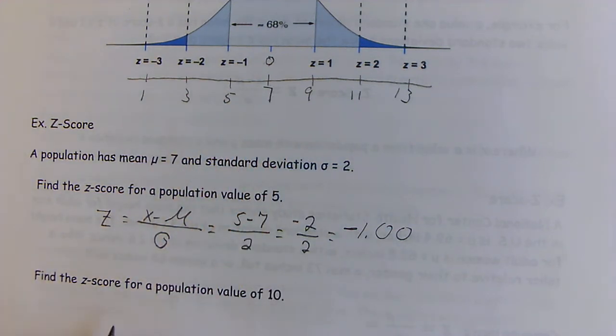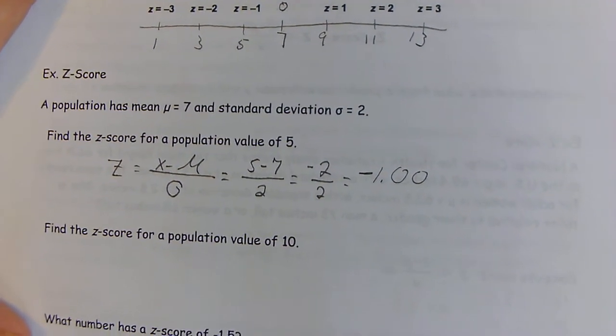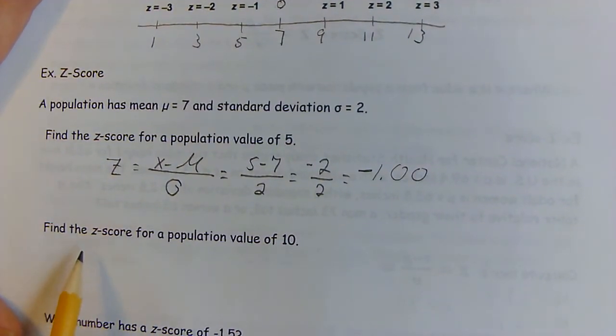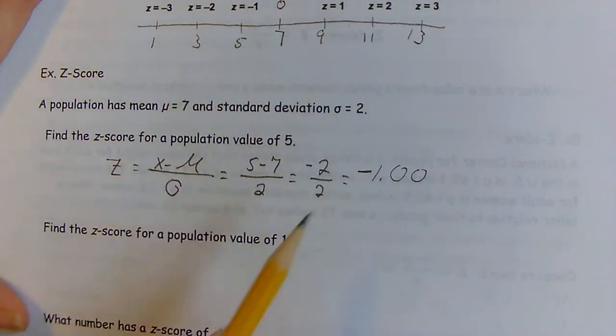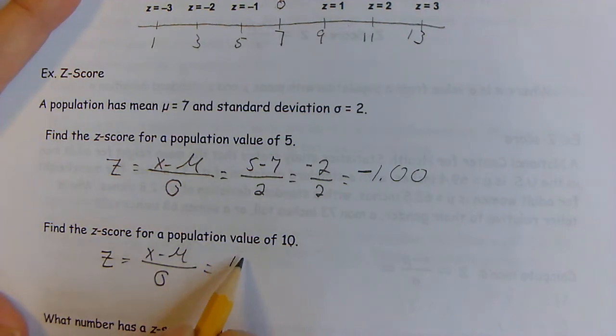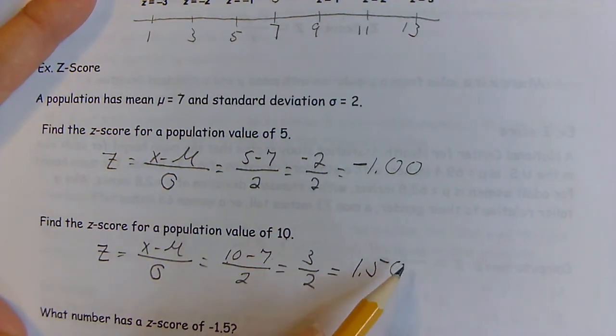We'll do it again for 10. Ten is greater than the average so it's going to be a positive z-score. If we look up here it's obviously going to be a positive 1.5, but this works even when the numbers aren't this easy to see. Ten is greater than seven, so it's positive. That's three divided by two, which is positive 1.5. Ten for this data set is exactly one and a half standard deviations above the population mean.